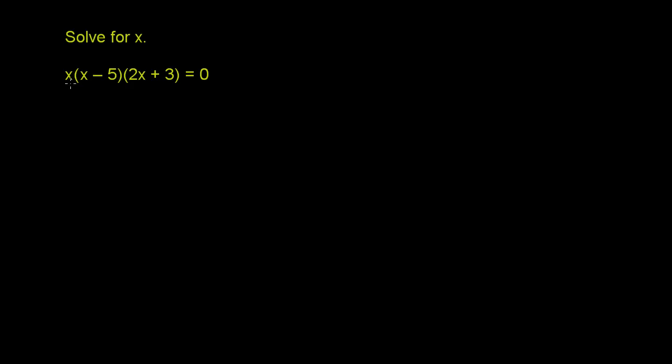Solve for x. And we have x times x minus 5 times 2x plus 3 is equal to 0. Now let's think about this for a second.